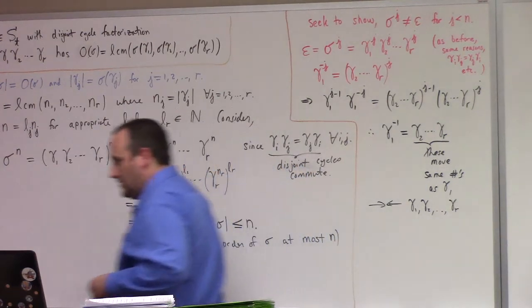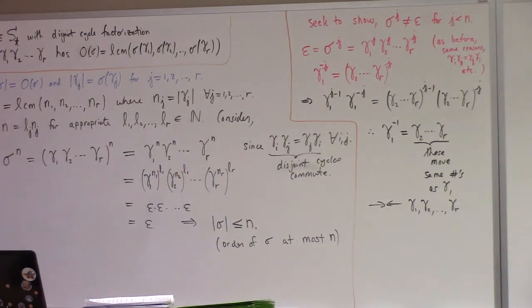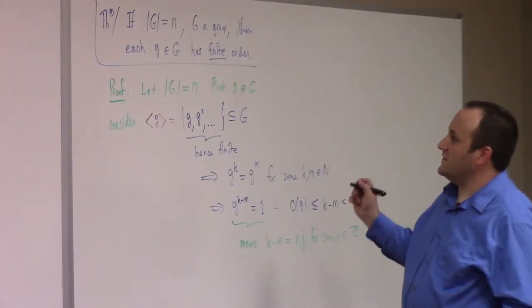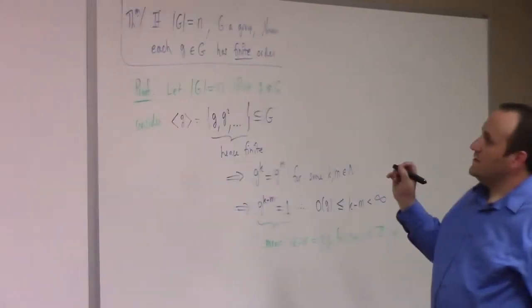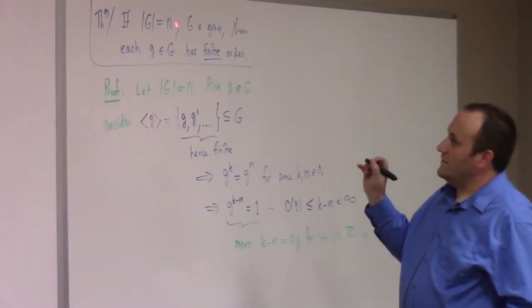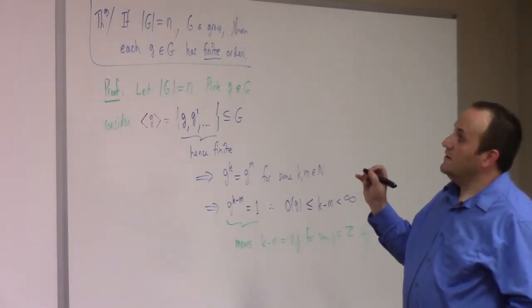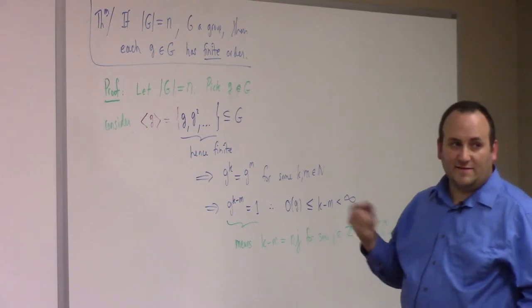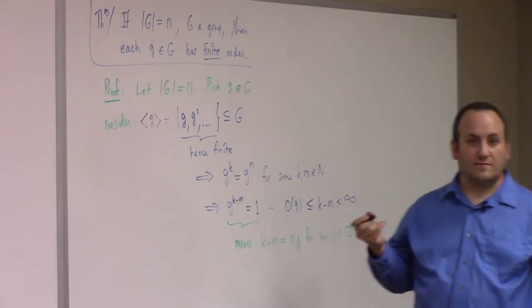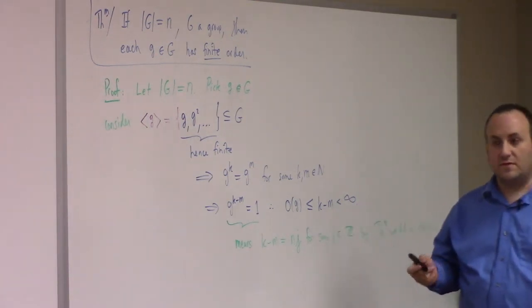Let's get started. I'll go through these proofs with you very quickly. We should still have time for questions afterwards. So this was one of the theorems that I skipped. If you have a finite group and you pick any element in it, it has finite order. The proof of this is so simple.